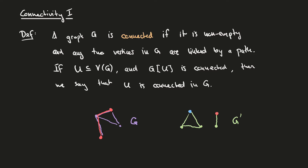On the other hand, if we take the three corners of this triangle as a subset U of the vertices of G, then the graph induced by this subset of vertices is the triangle itself. And in this case, this triangle is connected, so we would say that the set U of these vertices that make up the corners of the triangle are connected in the graph G prime.